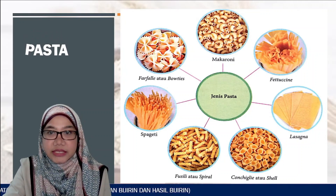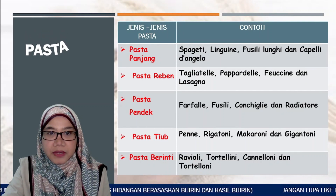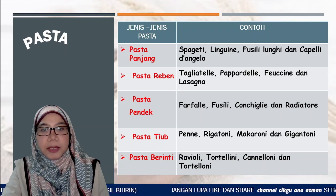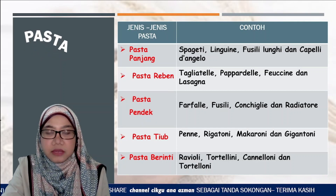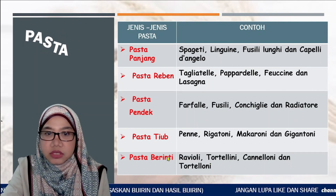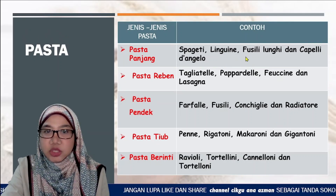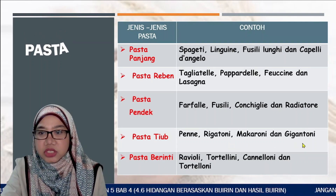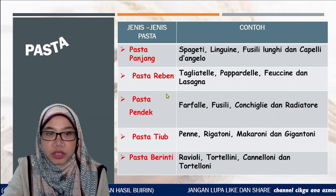Jenis-jenis pasta dikategorikan kepada lima: pasta panjang, pasta ribbon, pasta pendek, pasta tube dan pasta berinti. Contoh-contoh pasta mengikut kategorinya: pasta tube termasuk penne, rigatoni, macaroni dan gigantoni. Terdapat banyak lagi contoh pasta dalam setiap kategori.